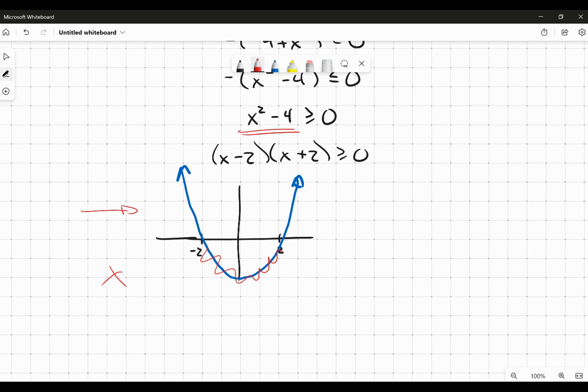Now, that is going to start happening when x is equal to 2 or negative 2. If you plug positive 2 or negative 2 in for x, we're going to get 0. So that's my or equal to.